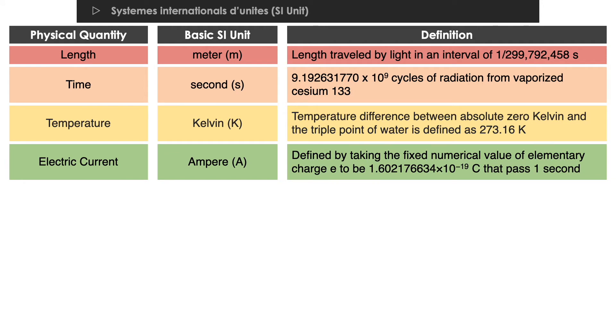Current is the amount of charge that passes a given point per unit time. The SI basic unit of current is ampere. One ampere is defined by taking the fixed numerical value of elementary charge E to be 1.6 times 10 raised to negative 19 Coulomb that passes one second.